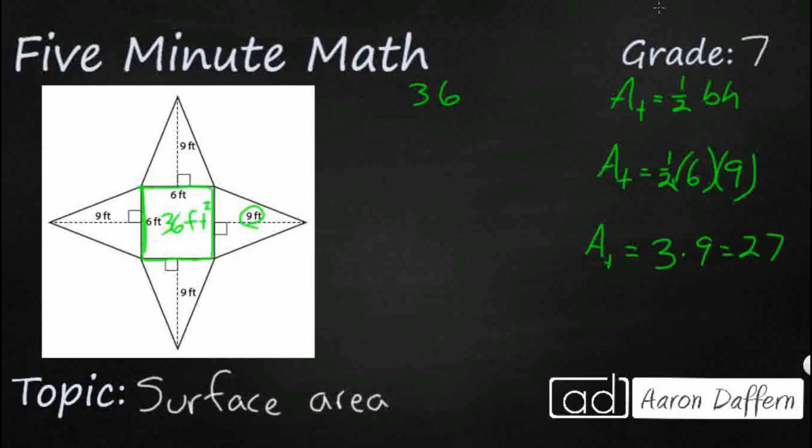So we can either add 27 four different times. I'd rather go ahead and just do 27 times 4 since I know that I've got 4 of these 27 square feet all the way around. 7 times 4 is 28, 4 times 2 is 8, add that 2 is 10. So I've got 108. And we can add this together: 144 square feet is the surface area of this square-based pyramid.